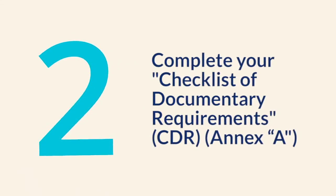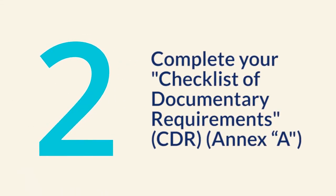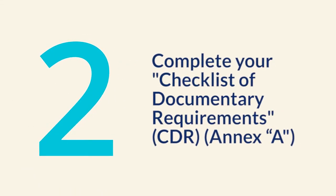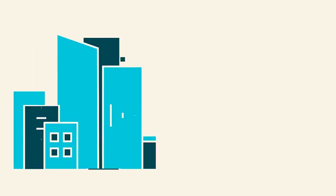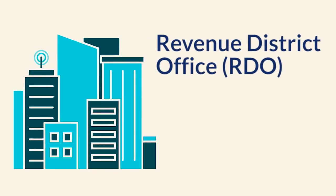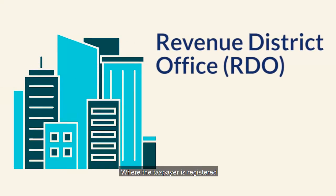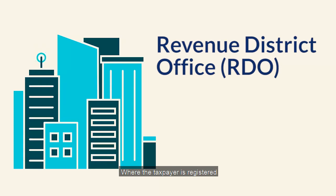Next, complete your checklist of Documentary Requirements or CDR Annex A to the Revenue District Office or RDO where the taxpayer is registered. Step 3.